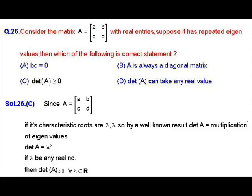Solution of question number 26. In this question, A is a 2×2 real matrix with 2 repeated eigenvalues. Let λ be its repeated eigenvalue, so both eigenvalues are λ. We know the product of eigenvalues equals the determinant of A, so det(A) = λ². Since λ is a real number, λ² ≥ 0, so det(A) is always greater than or equal to 0. Therefore option C is correct.